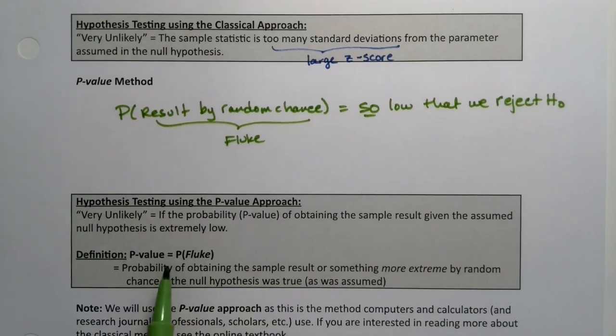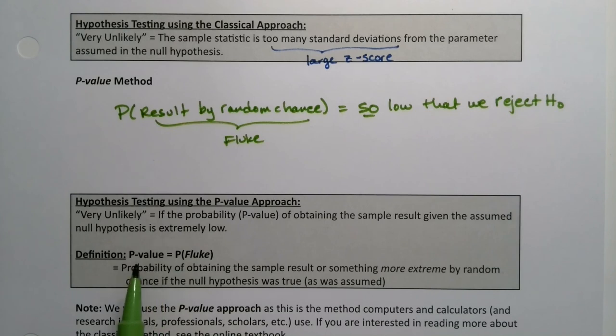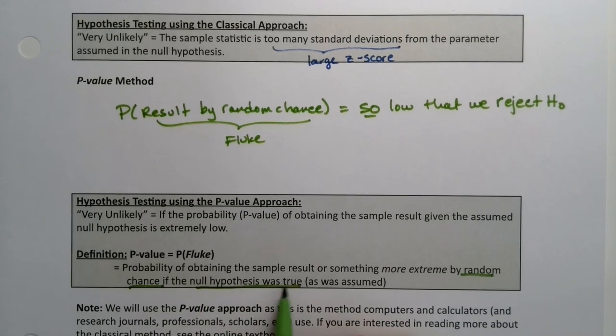Keep in mind, that's the definition of what a p-value is. P stands for probability. The p-value is the probability of obtaining that sample result or something even more extreme, farther out into the tails, by random chance if the null hypothesis was true.